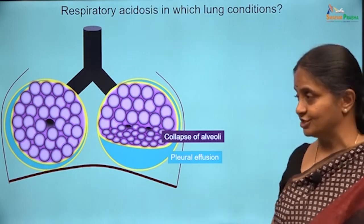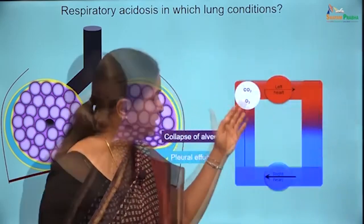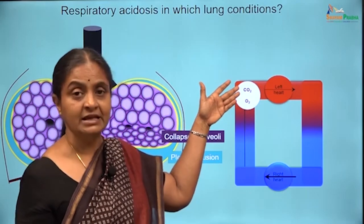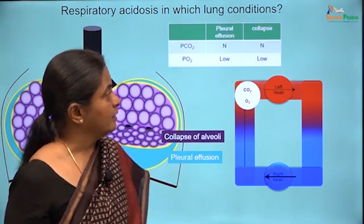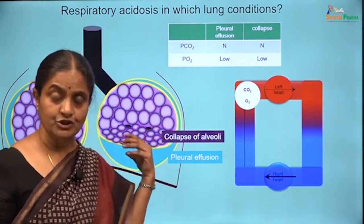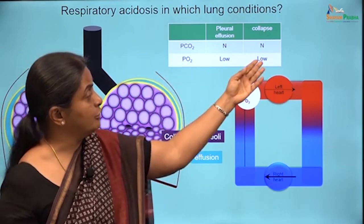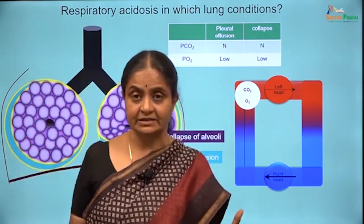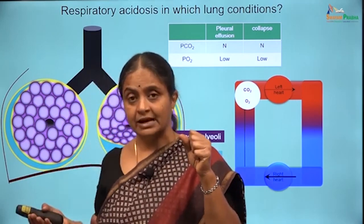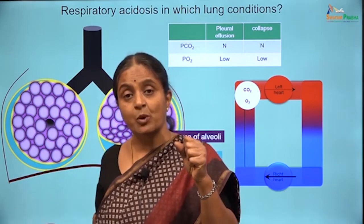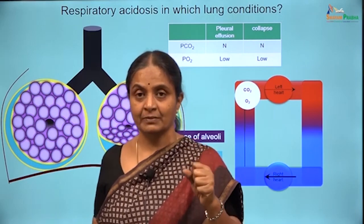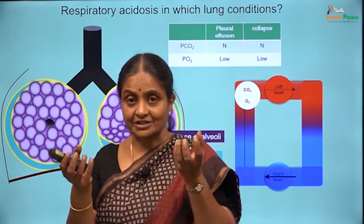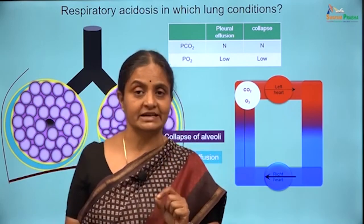Will there be respiratory acidosis in these conditions? There may be a decrease in oxygen, but is there an increase in carbon dioxide as well? Only when there is an increase in carbon dioxide is there going to be respiratory acidosis. If the pleural effusion is not extensive, oxygen may be low but carbon dioxide levels will be normal. Even if the pleural effusion is one-sided and one lung has completely collapsed, the other lung can maintain carbon dioxide levels normal. Only if there is bilateral extensive pleural effusion affecting ventilation will carbon dioxide levels increase.